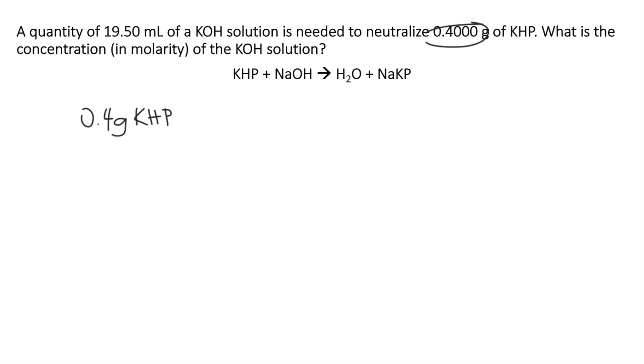For KHP, its molar mass is 204.22 grams per mole. So 1 mole of KHP is equivalent to 204.22 grams of KHP. The grams of KHP cancel out, and this gives you moles of KHP.